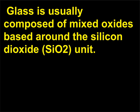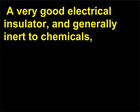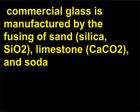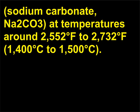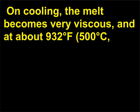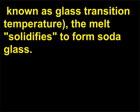Glass is usually composed of mixed oxides based around the silicon dioxide (SiO2) unit — a very good electrical insulator and generally inert to chemicals. Commercial glass is manufactured by the fusing of sand (silica, SiO2), limestone (CaCO3), and soda (sodium carbonate, Na2CO3) at temperatures around 2,552 to 2,732 degrees Fahrenheit (1,400 to 1,500 degrees Celsius). On cooling, the melt becomes very viscous, and at about 932 degrees Fahrenheit (500 degrees Celsius), known as the glass transition temperature, the melt solidifies to form soda glass.